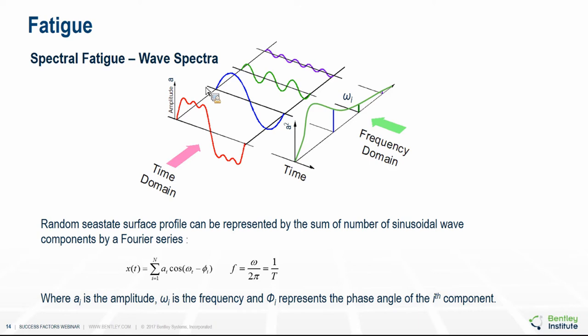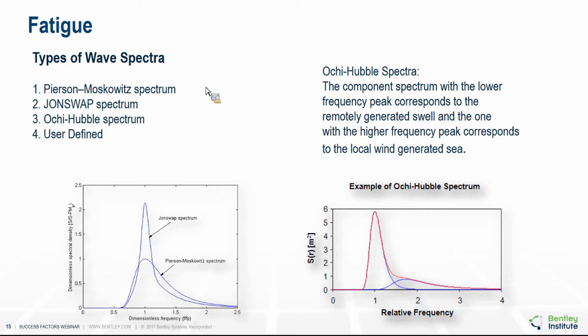For those familiar with electrical engineering, power is defined as a function of the square of the amplitude, and therefore the wave spectrum is also sometimes referred to as the power spectral density. The types of wave spectra available in SACS are the Pierson-Moskowitz, JONSWAP, and Ochi-Hubble. The Pierson-Moskowitz is typically used in the Gulf of Mexico and Asia, the JONSWAP spectrum is typically used in the North Sea, and the Ochi-Hubble spectrum is commonly used off the west coast of Africa.